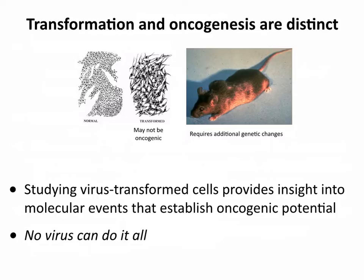So viruses transform cells, and transformation makes them immortal — they keep dividing forever. When that happens, mutations accumulate, and eventually, if you get the right 12 or so mutations, that transformed cell will become a cancer. This is a very important distinction: transformation has altered cell properties, but it's not necessarily going to lead to tumors unless additional changes occur. So we're going to talk about how studying virus-transformed cells really helped us understand the progression to cancer. No virus can do it all — no virus on its own can cause a cancer. It needs help from the DNA of the cell. The only thing the virus is doing is making the cells divide, and then they need to accumulate the mutations that lead to cancer.